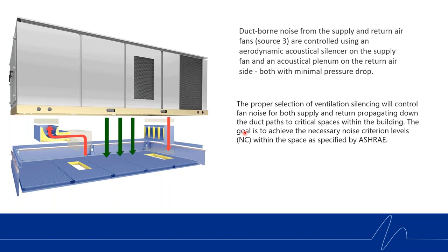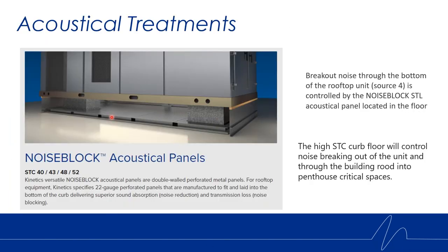In the bottom of the curb, we do have acoustical treatments. These can be laid in a factory curb — it doesn't have to be a special Kinetics isolation curb. You could have a sheet metal roof curb from the manufacturer and still put an acoustical treatment in the floor. For breakout noise through the bottom of the roof — source four — we offer our Noise Block acoustical panels, a high STC curb floor that controls noise breaking out of the unit through the building roof into the penthouse and critical spaces. These are made with double-walled perforated metal panels and come in STC ratings of 40, 43, 48, and 52.